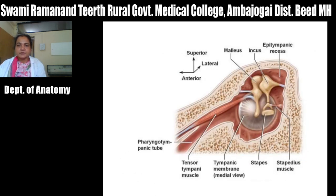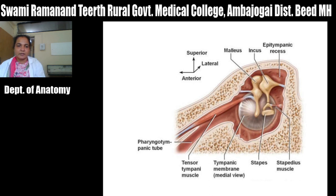This is the malleus and this is the incus. The short process of incus is present here. This is the long process of incus articulating with the head of the stapes, and this is the stapedius muscle. This is the posterior wall. This is the tympanic membrane, the tympanic sulcus, the tensor tympani muscle, and the pharyngotympanic or auditory tube.